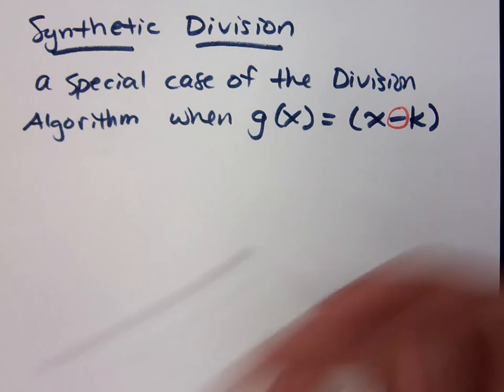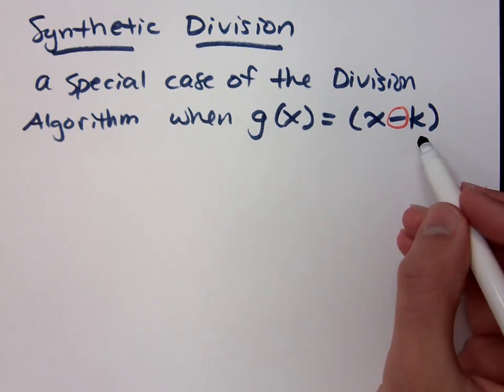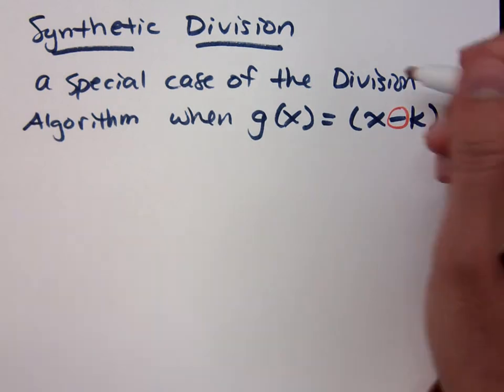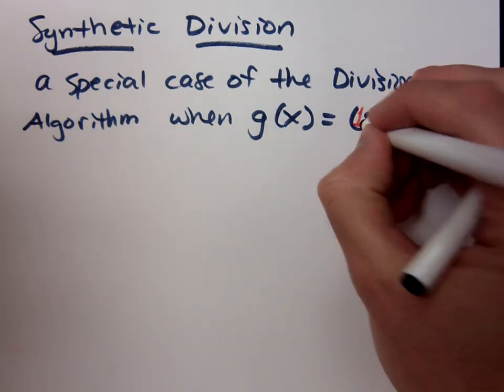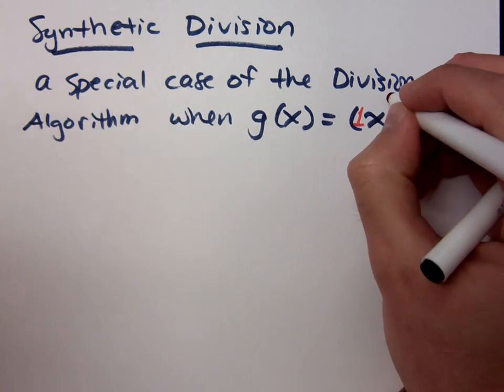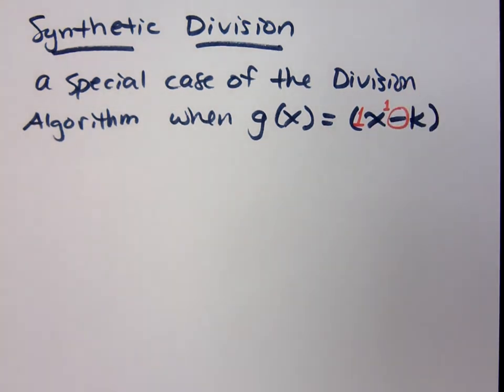Synthetic division is whenever we're dividing by something that's of this form. Now understand something about this form. What's your coefficient for x? What's the exponent on x? If you don't have that, you may not do synthetic division until you make an adjustment.